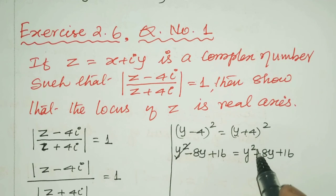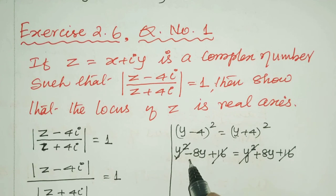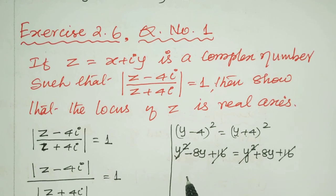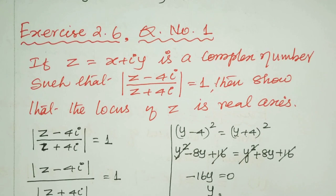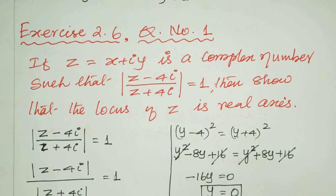The y squared terms cancel and the 16s cancel. What remains is minus 8y equals plus 8y, giving minus 16y equals 0, so y equals 0. Since y equals 0, the locus of z lies on the x-axis, which is the real axis.